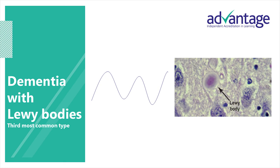Dementia with Lewy bodies, or DLB, is the third most common type of dementia. DLB shares symptoms with both Alzheimer's disease and Parkinson's disease. Frederick Lewy, a colleague of Alois Alzheimer, identified tiny deposits of protein inside nerve cells. It's not understood why Lewy bodies appear in the brain or exactly how they cause dementia. What is known is their presence is linked to a low level of important chemical messengers and to a loss of connections between nerve cells. People with Lewy body dementia fluctuate physically and cognitively within a day — hour to hour, even minute to minute.